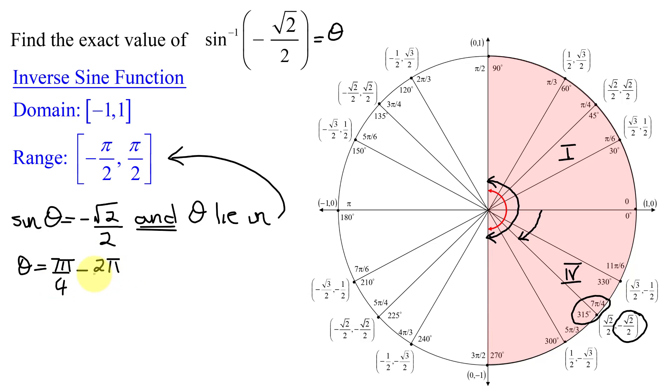Subtracting fractions and whole numbers, turn the whole number into a fraction by dividing by 1. Need a common denominator that's going to be 4, so multiply numerator and denominator by 4 over 4. So I'm going to get 7 pi over 4 minus 2 times 4 is 8 pi over 4.